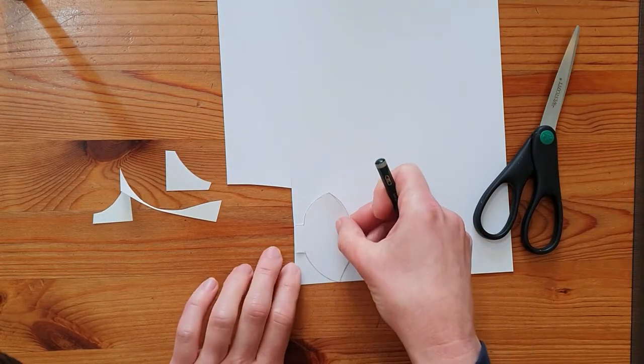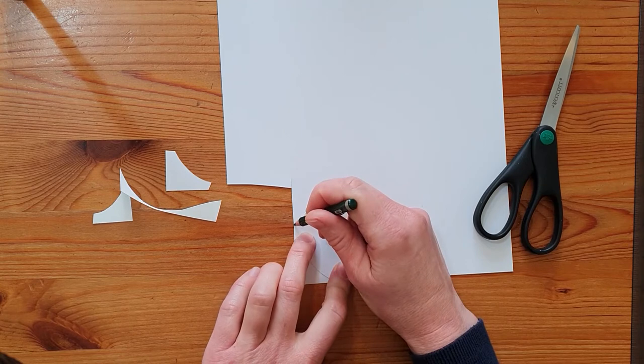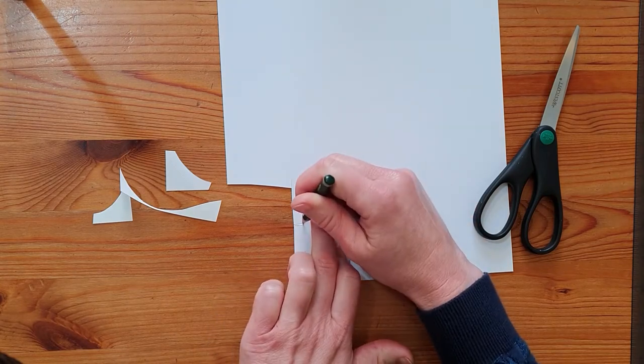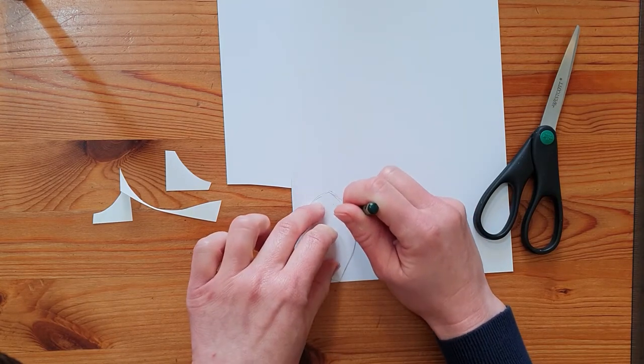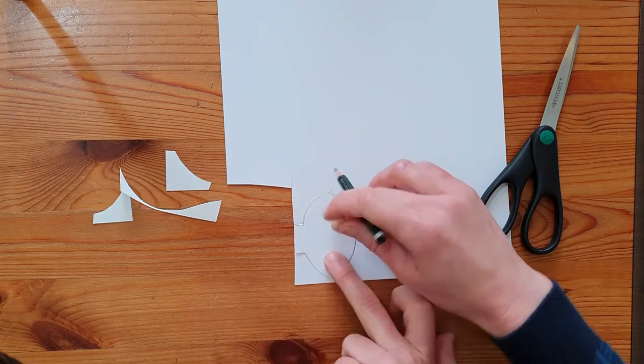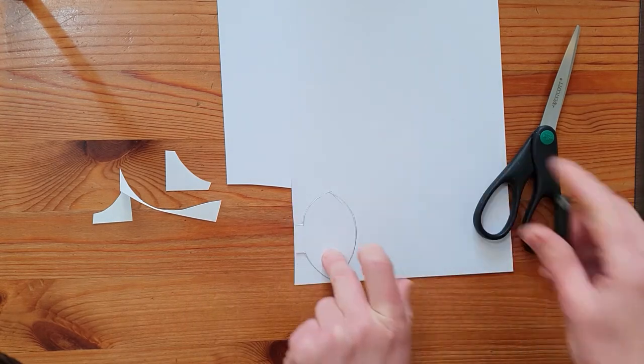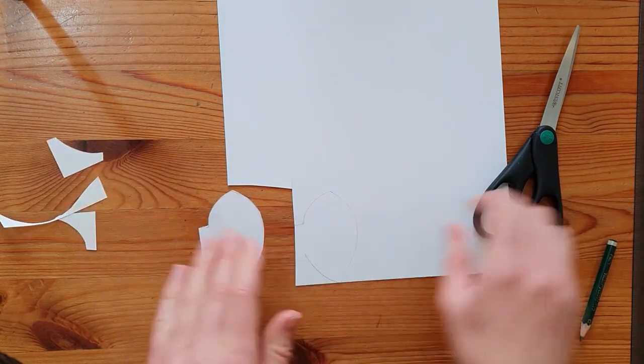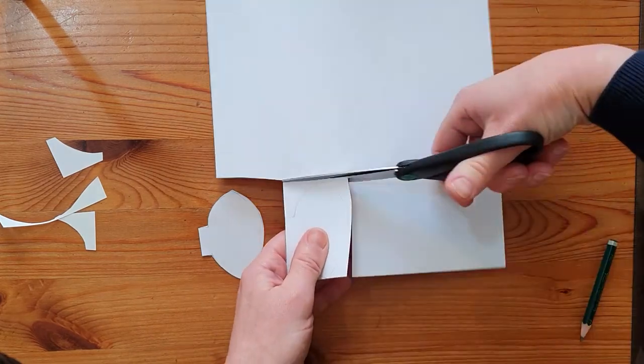Trace around the first ear to create a second ear exactly the same size and cut this out too.